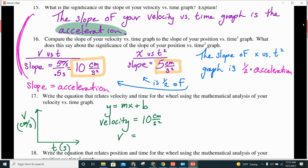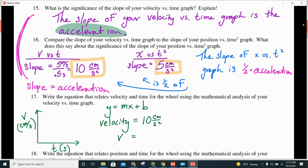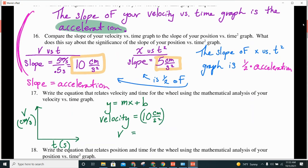And what does that slope on a velocity versus time graph represent? Slope on a velocity versus time graph is the? Yes, acceleration. So, this slope is my acceleration.